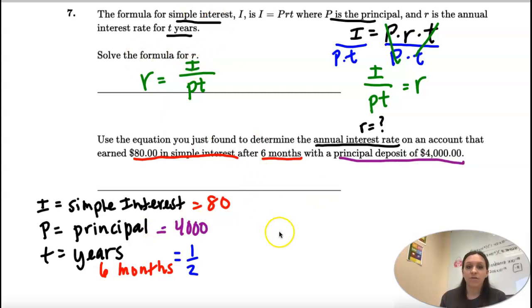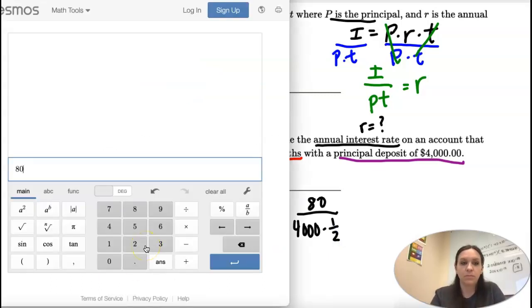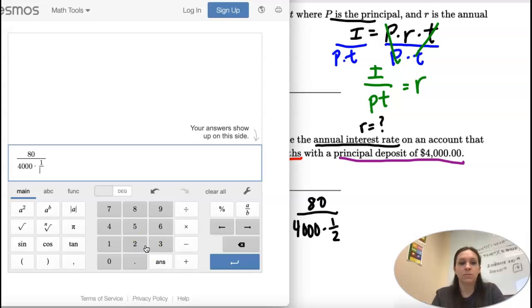Okay, so here's our formula. R equals I, which is 80, divided by P times T, 4,000 times one-half. So let's calculate. 0.04.